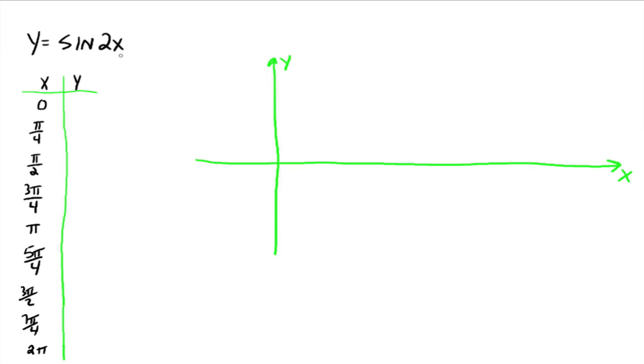Well, if you plug 0 in, 2 times 0 is 0, and the sine is 0, that's just 0. Plug pi over 4 in, and you get the sine of 2 times pi over 4, which is the sine of pi over 2, which would be 1.